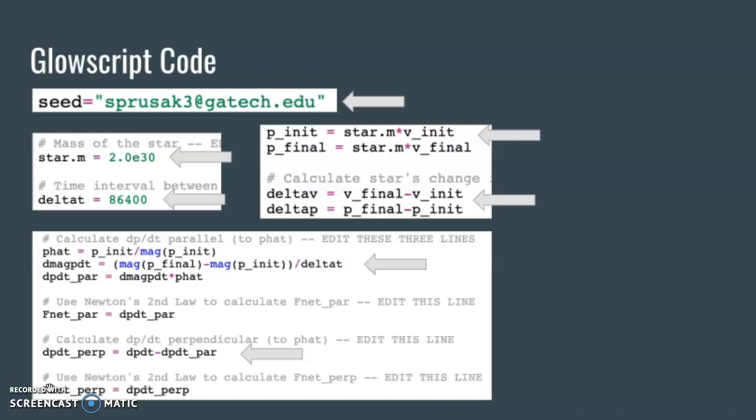Next, I had to update the equations. I started by updating the initial momentum and final momentum equations to be p-initial equals mass of star times velocity initial, and p-final equals mass of star times velocity final. Then, I updated the change in momentum and velocity equations to delta v equals v-final minus v-initial, and delta p equals p-final minus p-initial.